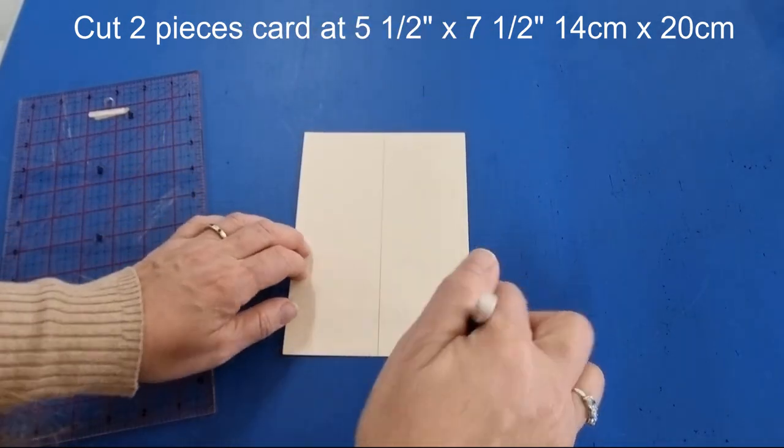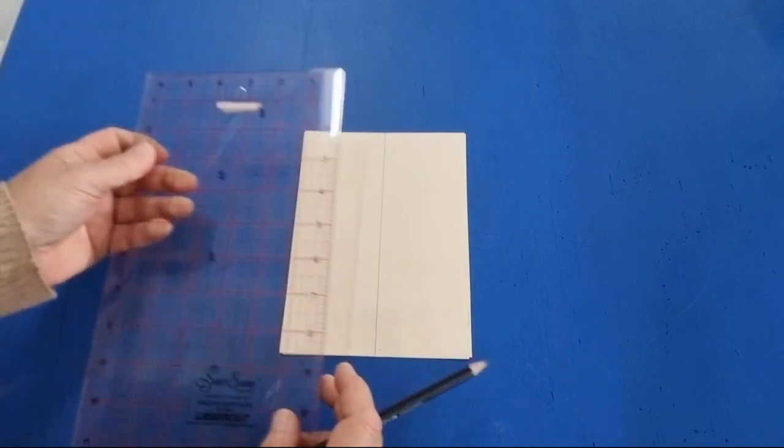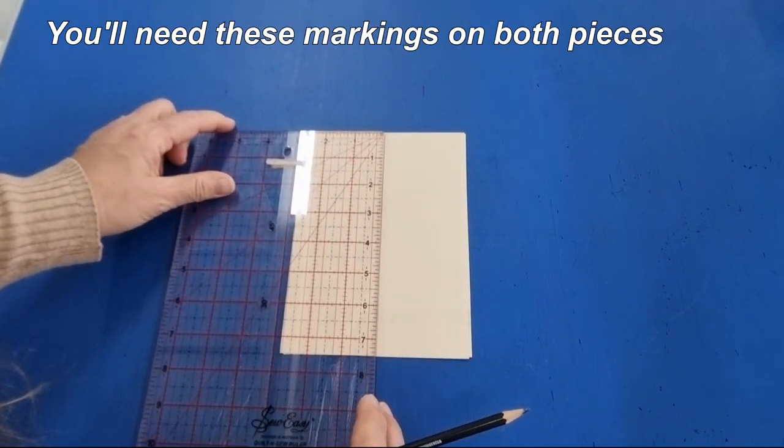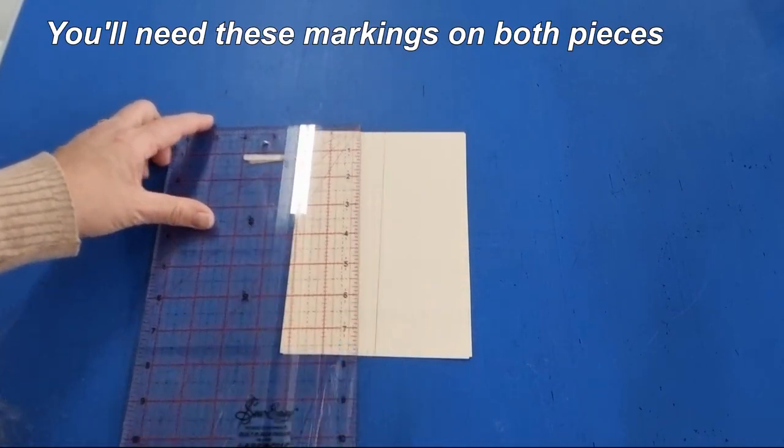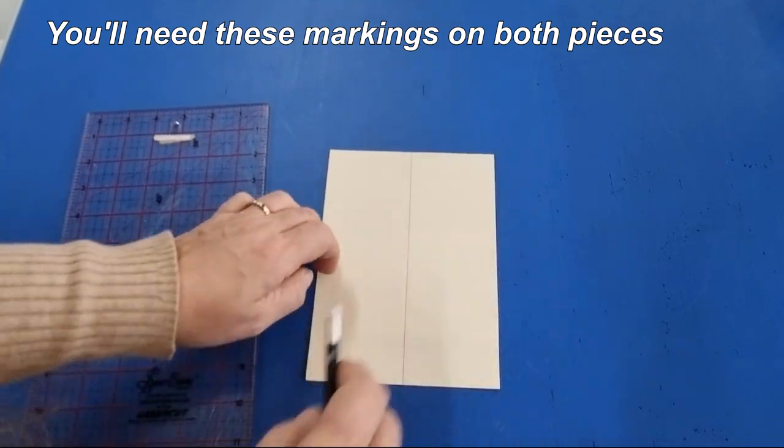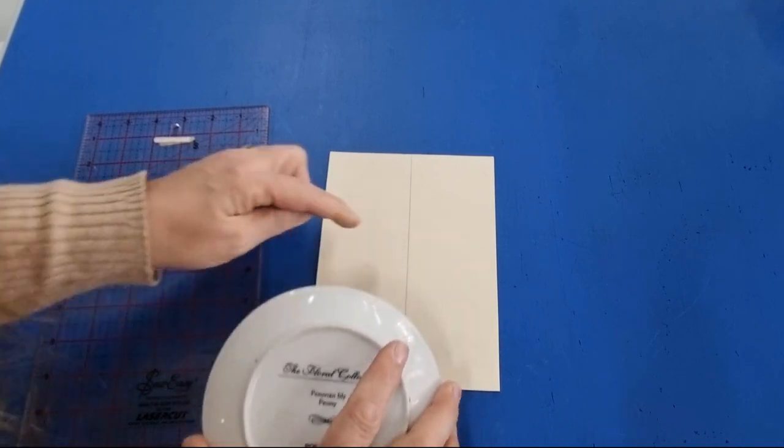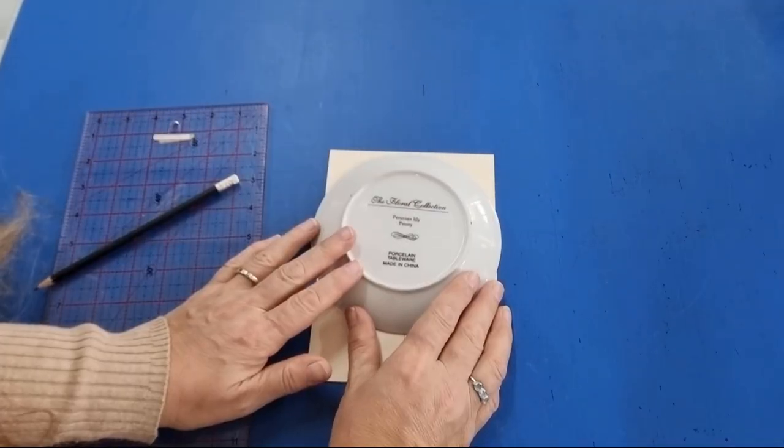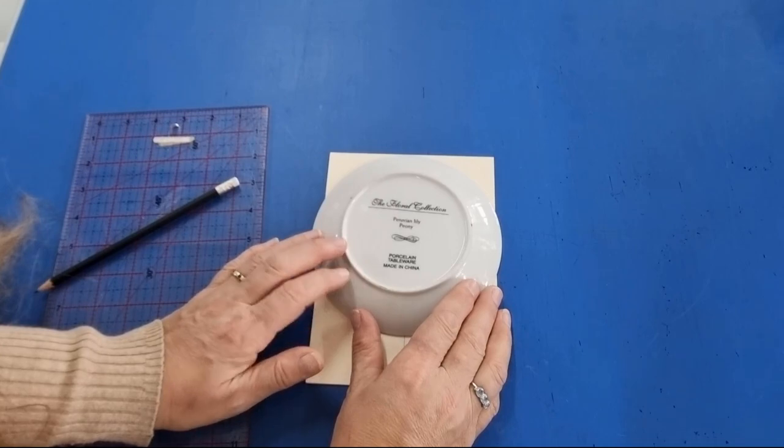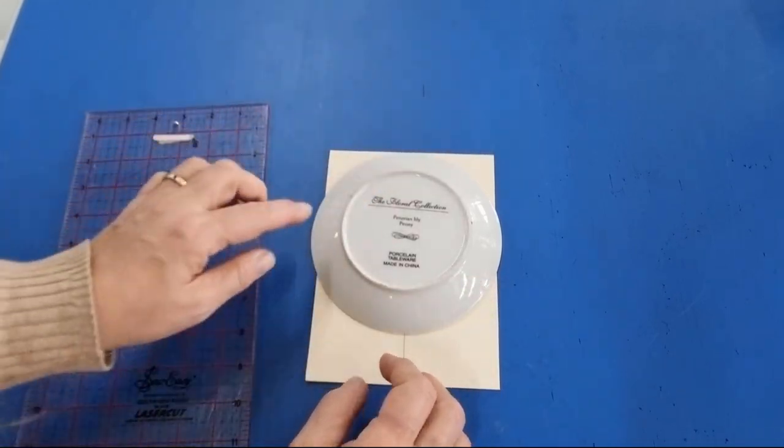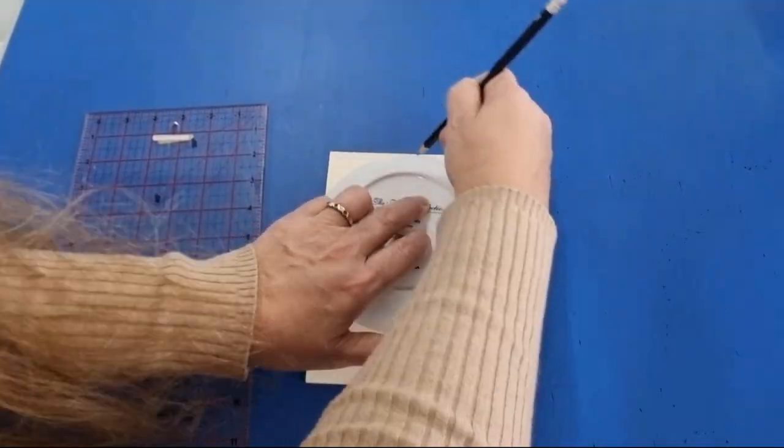Once you've done that, mark the center line. So half of that is two and three-quarter inches. Draw a line down the center here. Now you'll need to find a plate, and you want a plate to measure across the span of your card. It doesn't matter if it's a little bit big. Just line that up evenly both sides, and then we're going to mark a circle or an arc.